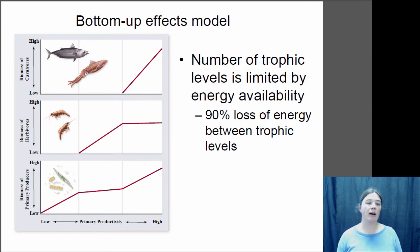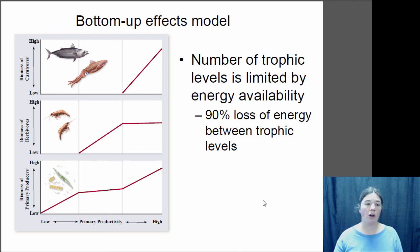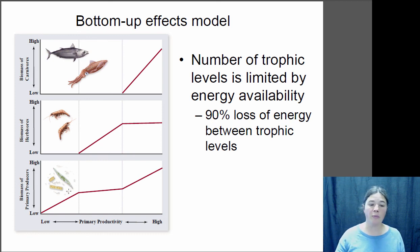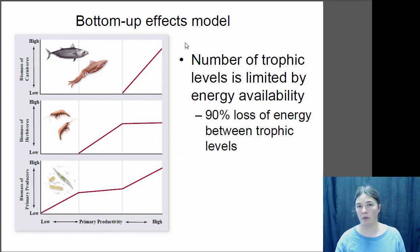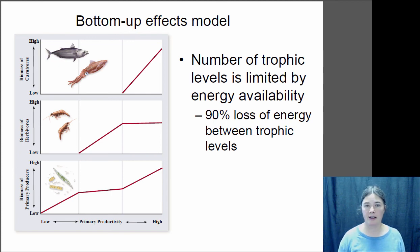Bottom-up effects have to do with the amount of primary production at the bottom of the food chain. At very low primary productivity, you can't support any consumers at all. Once productivity reaches a sufficient level, you can begin to support herbivores, and as productivity increases further, those herbivore populations grow. Eventually, enough primary productivity accumulates to support enough herbivores to sustain carnivores. This is an example of a bottom-up trophic cascade. That concludes our lecture on energy transfer in ecosystems.